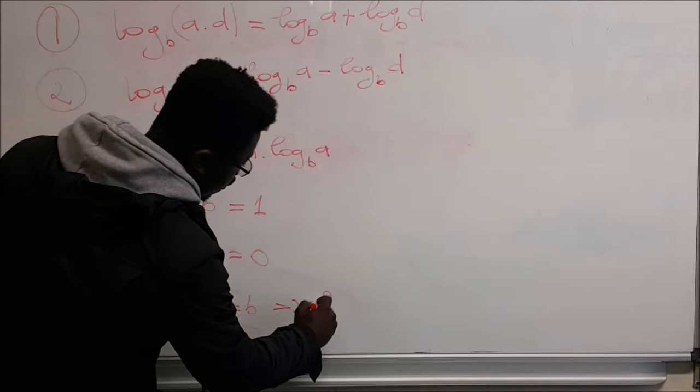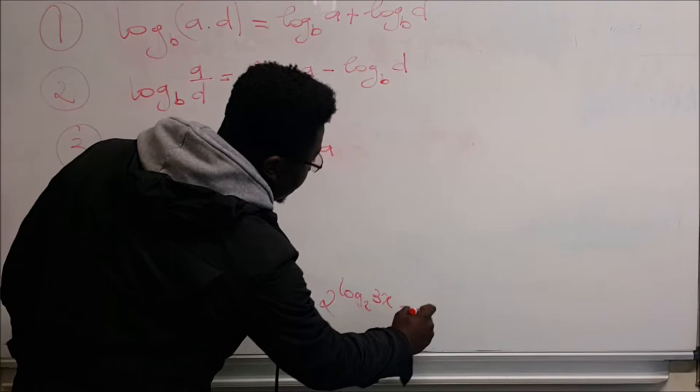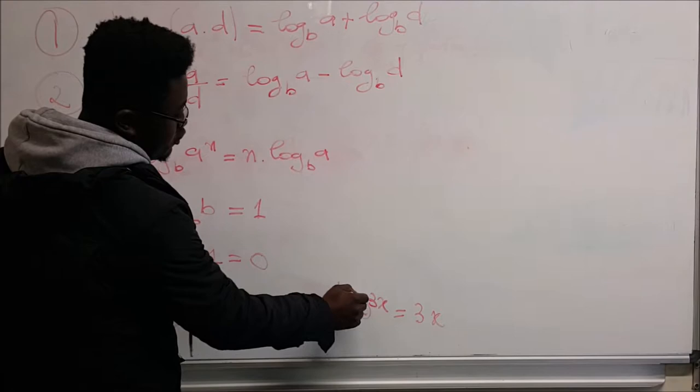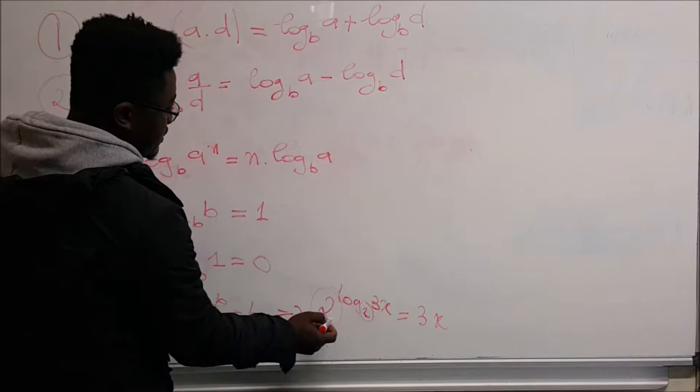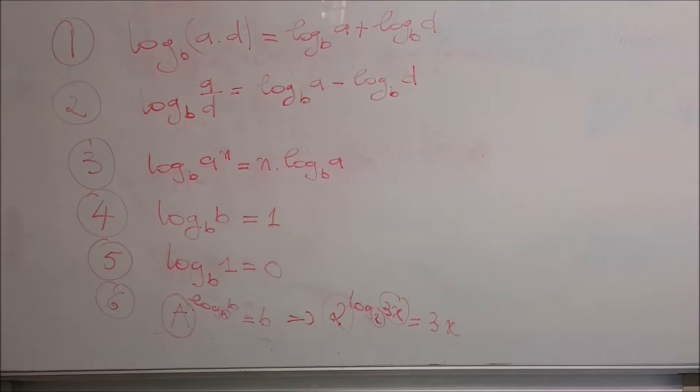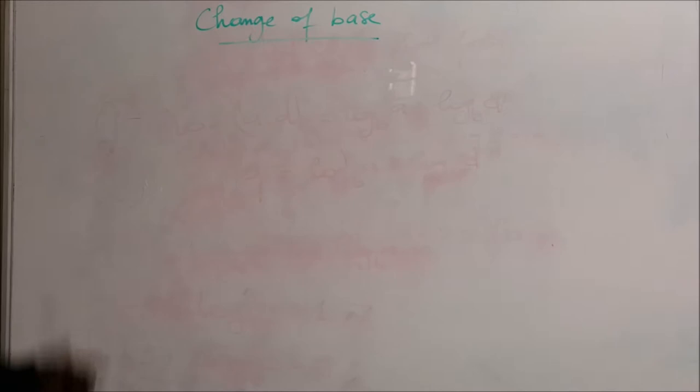Let's take another example. If we have 2 to the power of log base 2 of 3x, here it must be 3x — because the base 2 is the same as the base in the log. That's what gives you 3x back. So that's the formula you must master, because we generally use it mostly on some log problems.